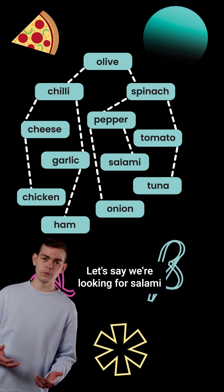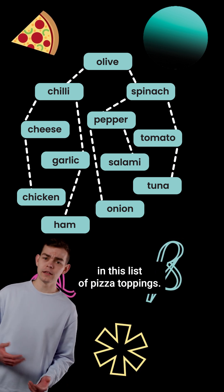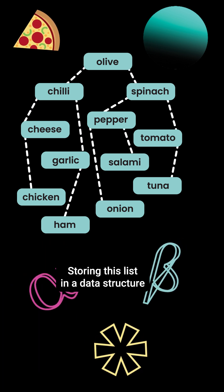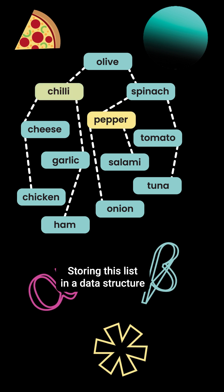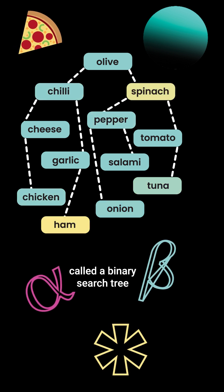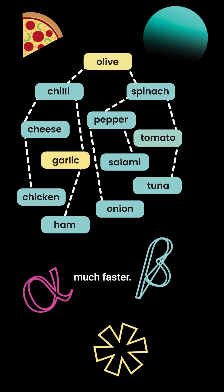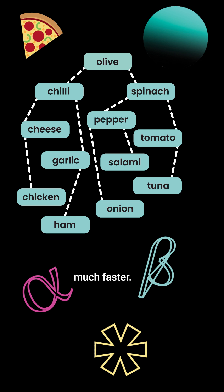Let's say we're looking for salami in this list of pizza toppings. Storing this list in a data structure called a binary search tree means we can find items much faster.